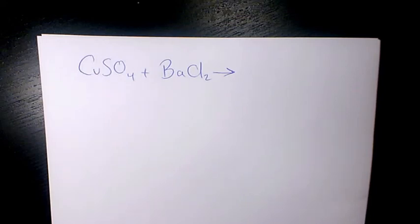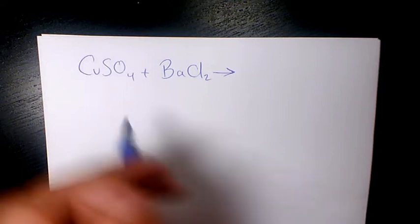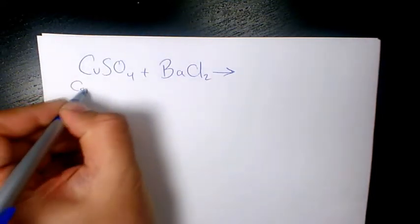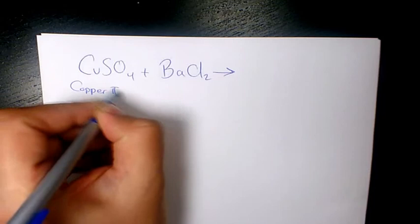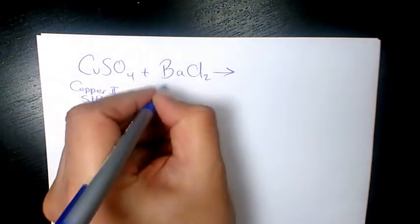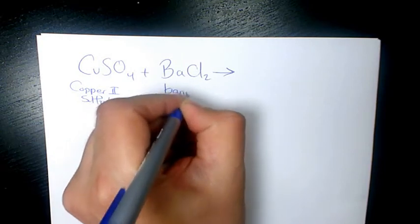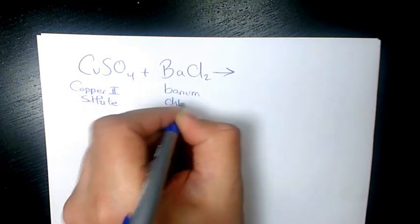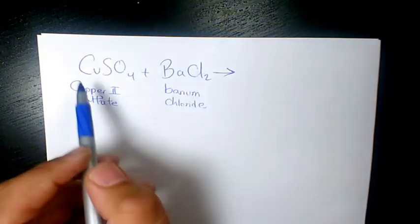What's up guys, this is Massey. Welcome to another video. In this video I want to show you how to balance the reaction between CuSO4 and BaCl2. CuSO4 is copper sulfate and BaCl2 is barium chloride, so this is going to be a double displacement reaction.